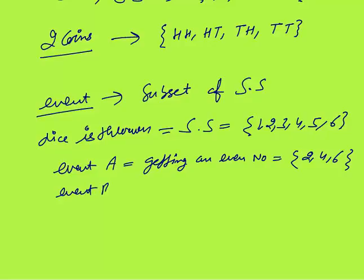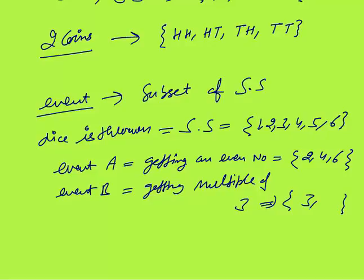Event B — getting a multiple of three. If you throw a dice and want to get a multiple of three, the favorable cases would be three or six. So that will be event B. In this way we can define events as per our convenience.